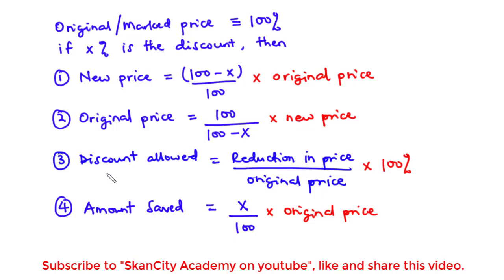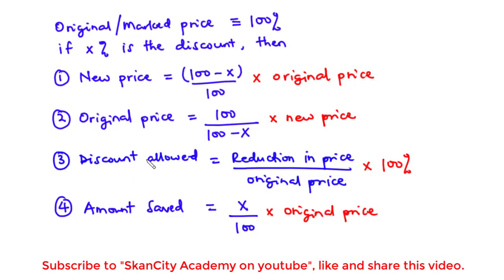If you want to find the discount allowed as a percentage, that is equal to the reduction in price divided by the original price, times 100 percent.